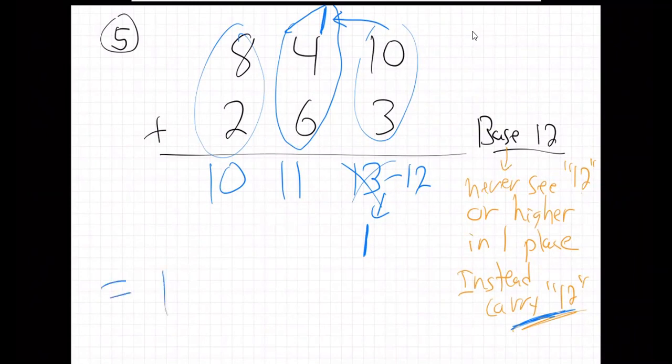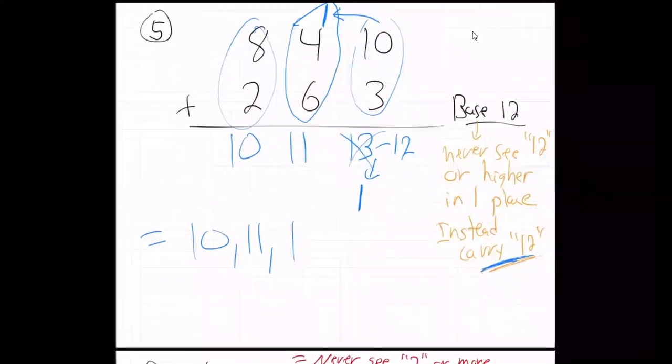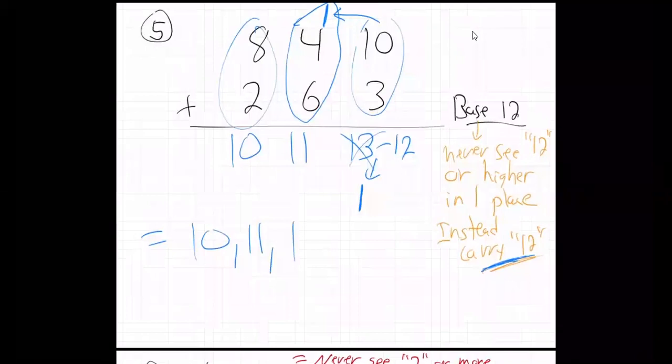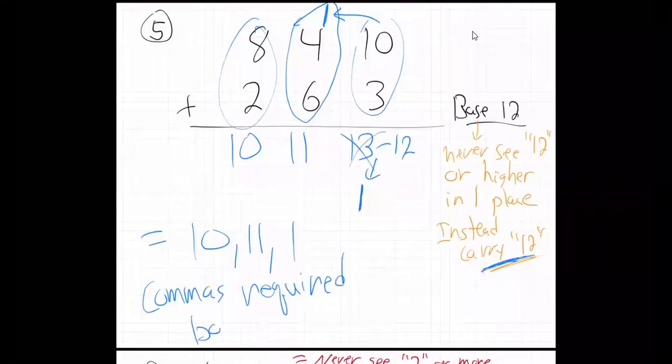So what's our answer then? 10, 11, 1. Do you see why commas are required in base 12? Do you see that? Do you see why that makes sense? It's not just some weird rule.